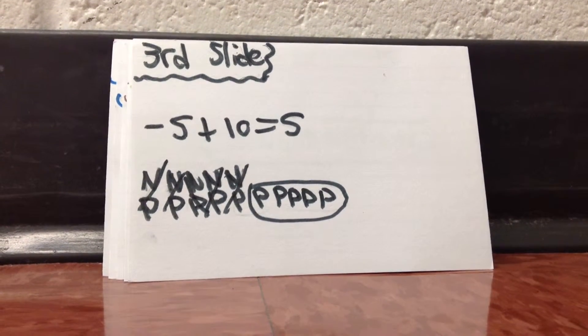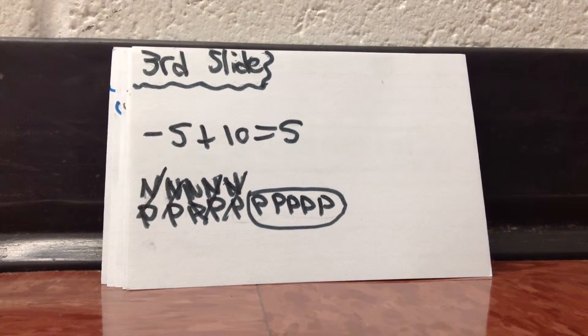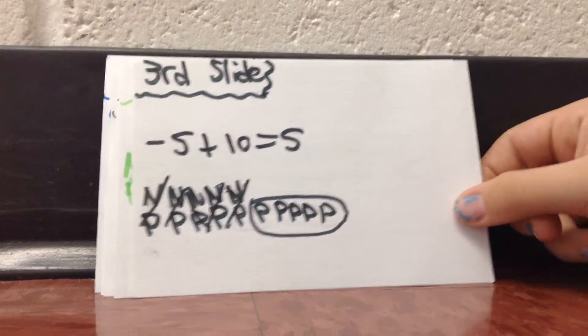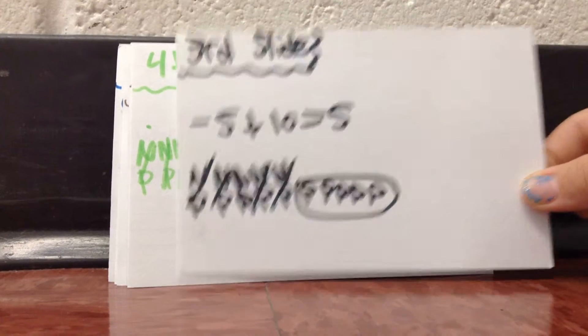Negative 5 plus 10 equals 5. We're going to use the N's for negatives and P's for positives. You have to take away 5 negatives and 5 positives, which leaves you left with no negatives, so your answer is positive, and your answer is 5.